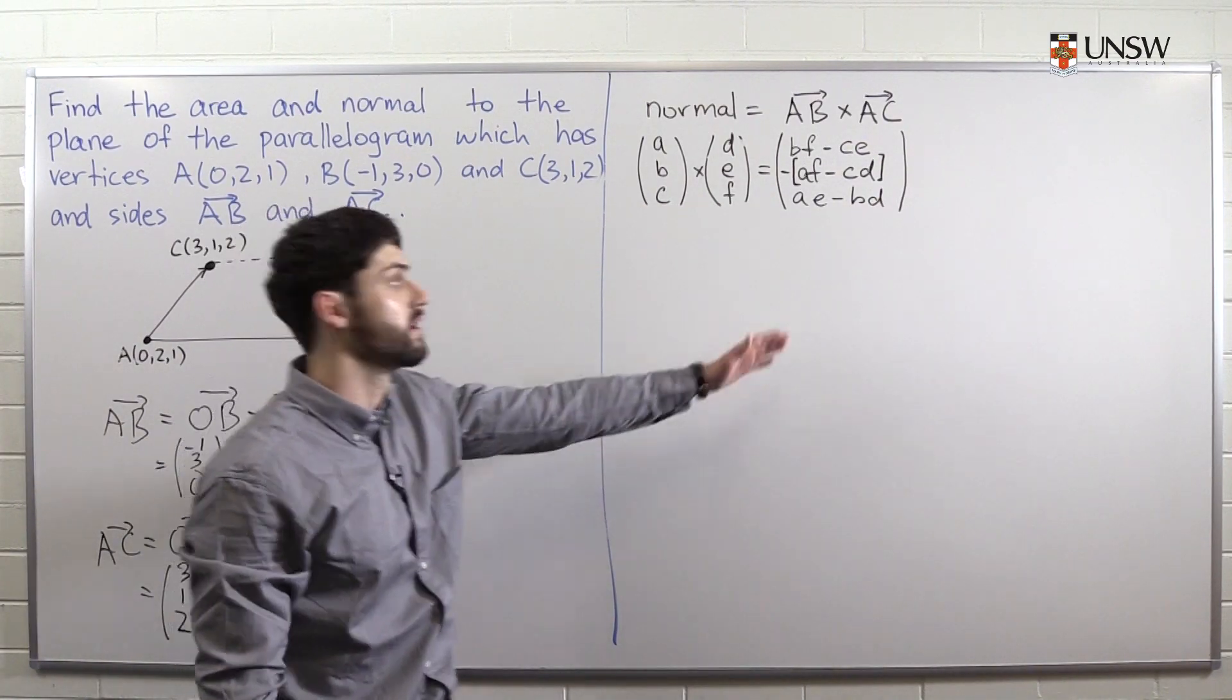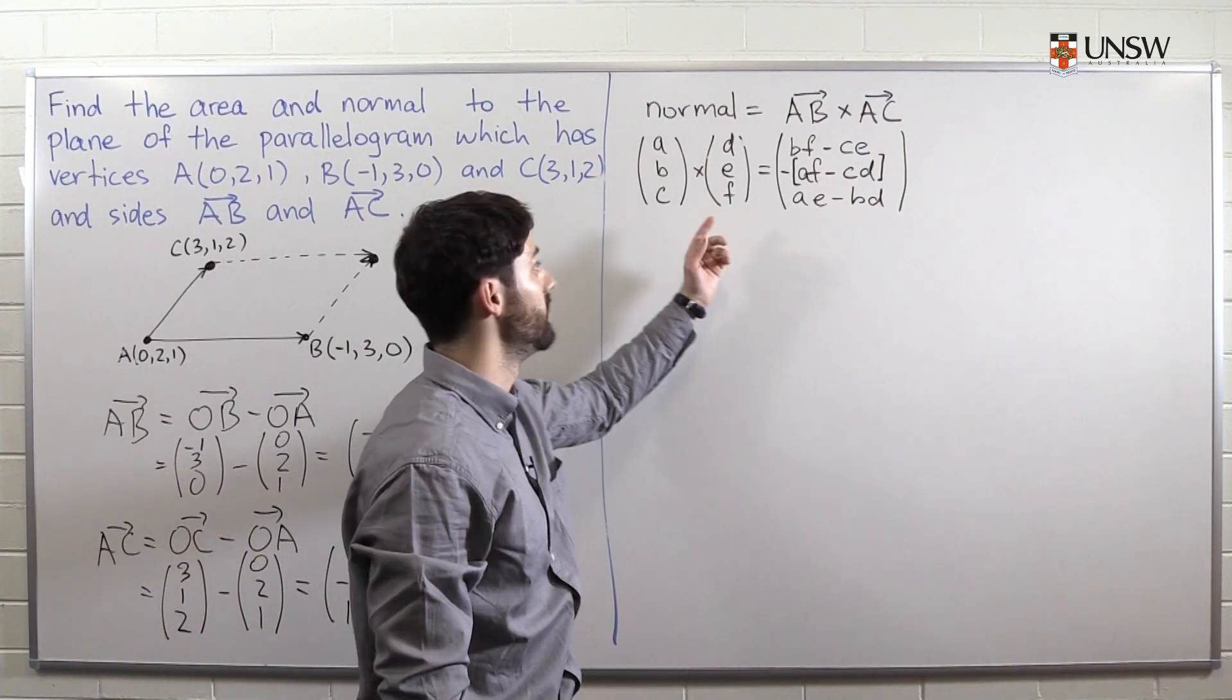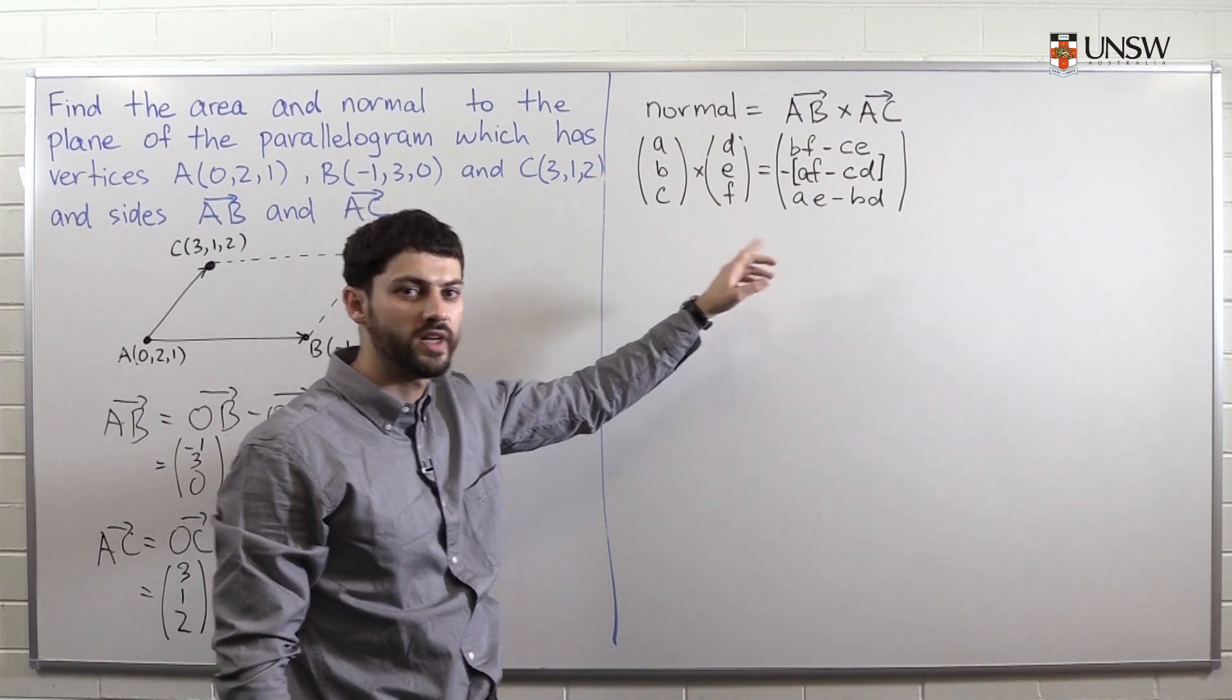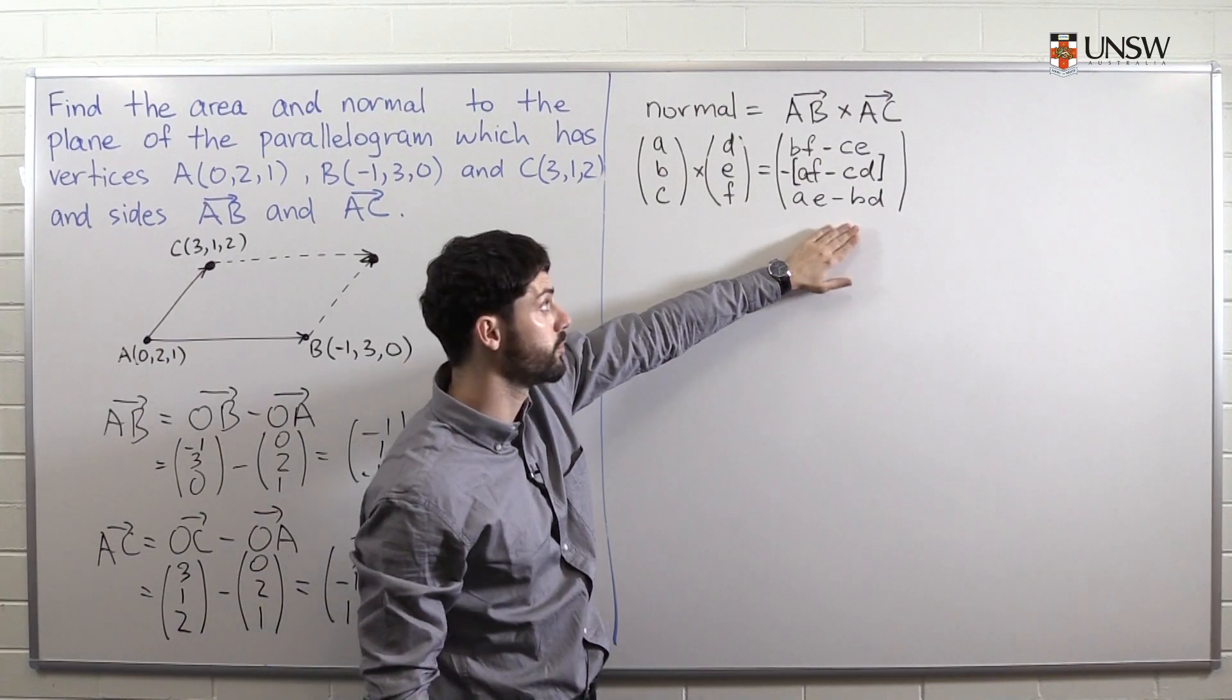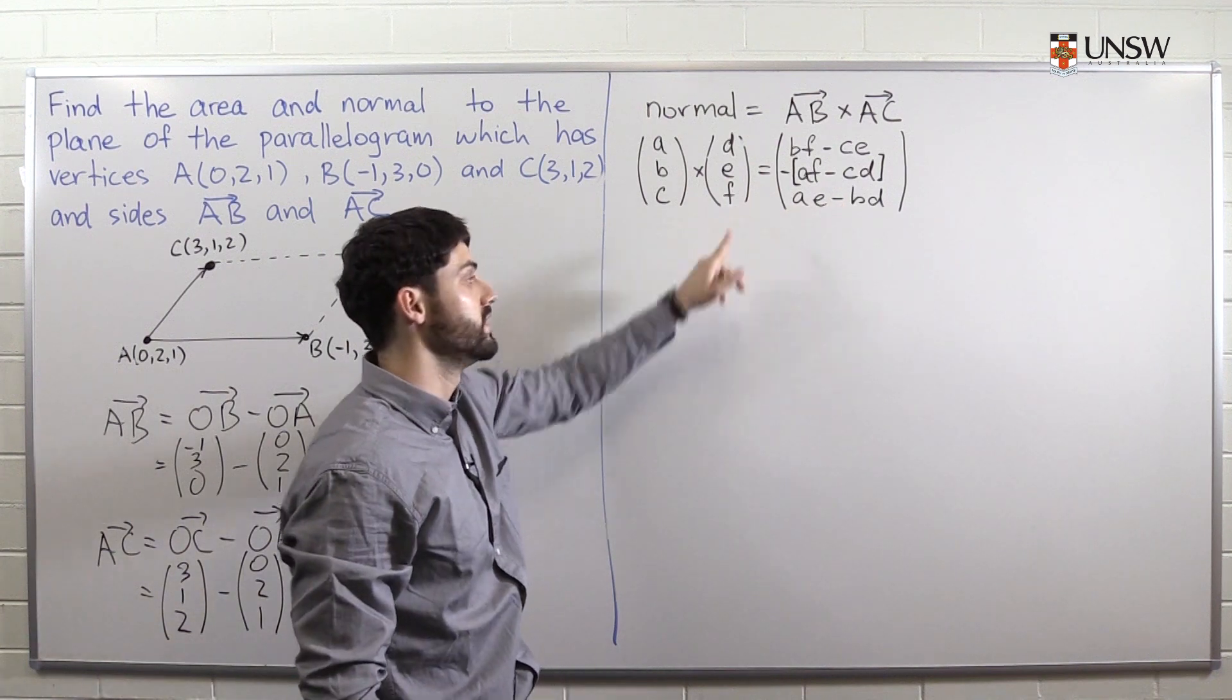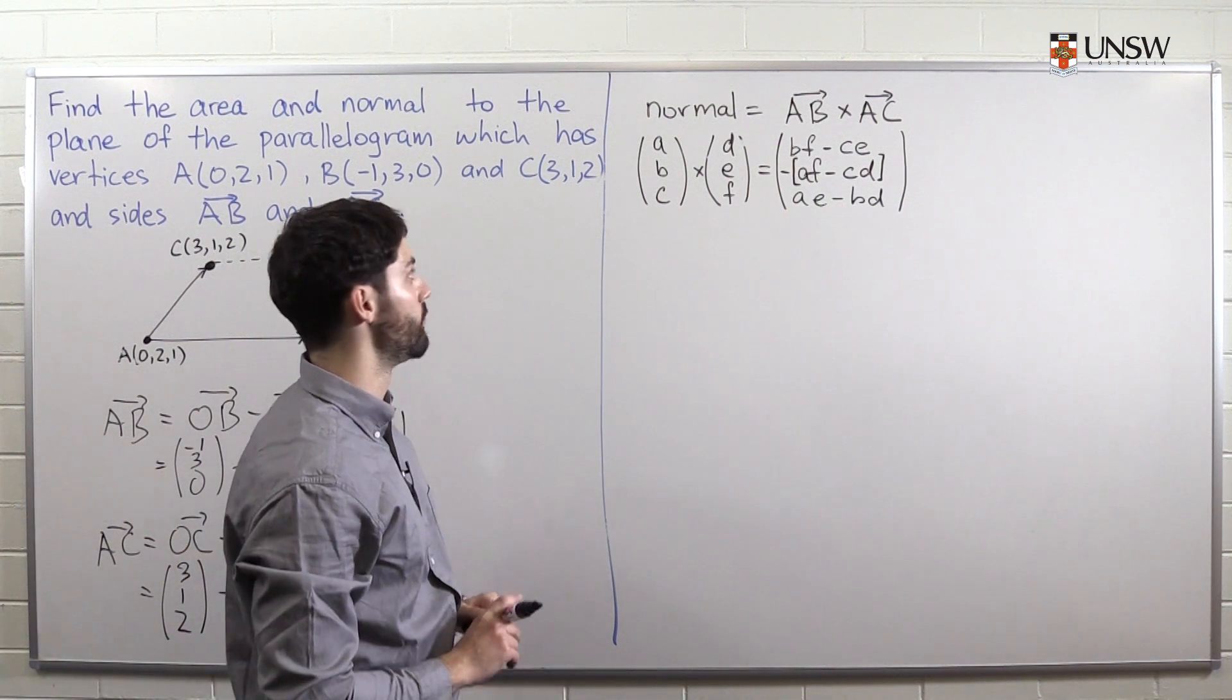And if you want, I encourage you to check that this vector is indeed perpendicular to both this one and this one. And how do we check something like this? You can take the dot product of this vector with this one and the dot product of this vector with this one. And hopefully you will get zero.